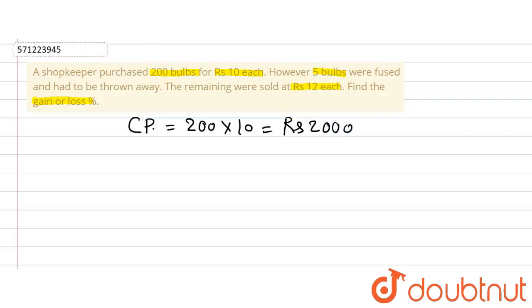Now let's find out the selling price. The selling price SP is equal to, 5 bulbs are fused, so remaining bulbs are 195 and each bulb was sold for Rs.12. So selling price will be equal to 2340.